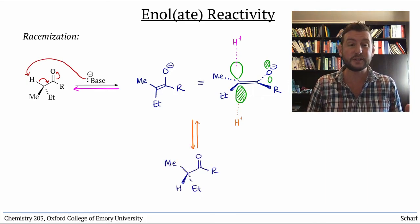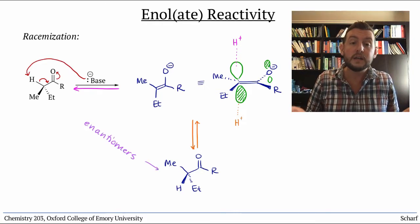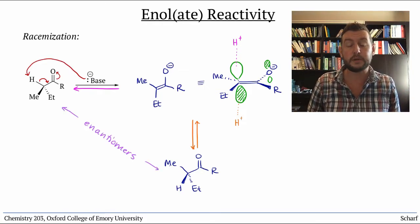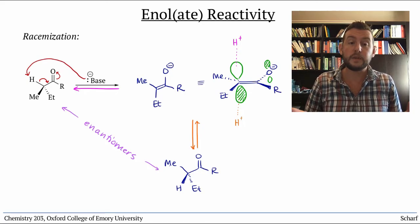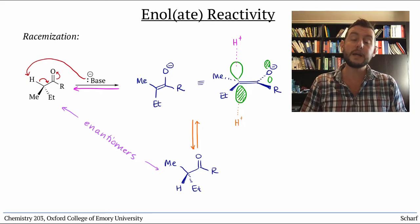Under neutral conditions, this racemization is fairly slow, since enolization is also pretty slow. With acid or base present, though, this becomes quite rapid.